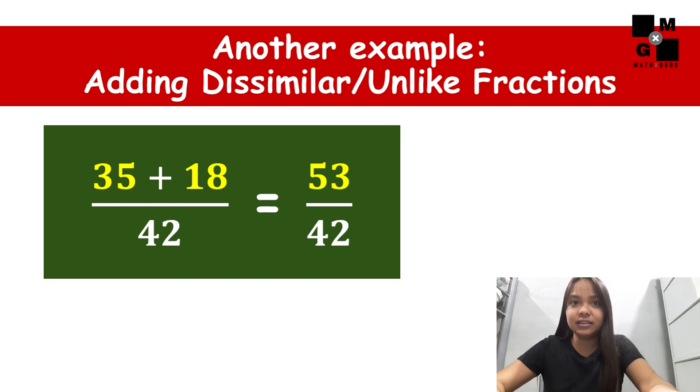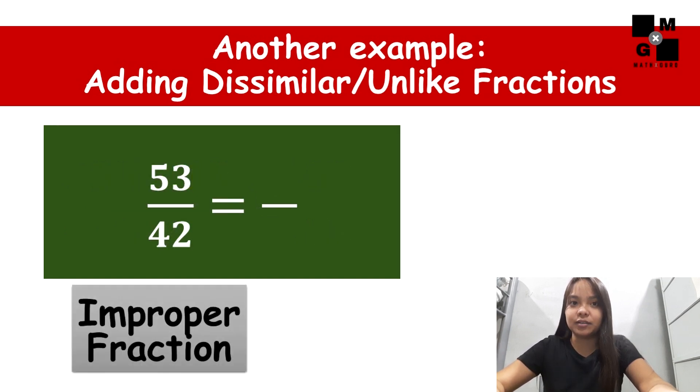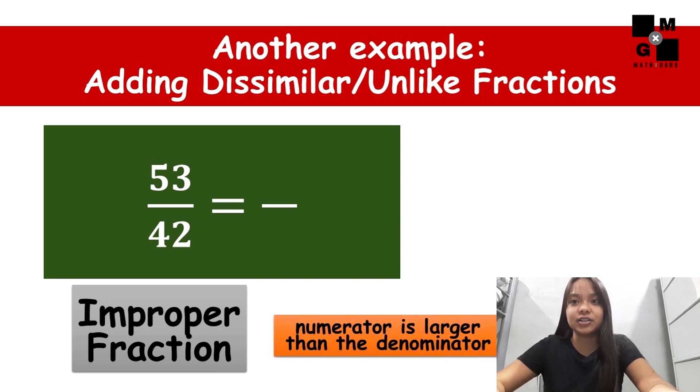Add thirty-five and eighteen, that's fifty-three. What have you noticed with our final answer? If you're thinking that this is an improper fraction, you're right. An improper fraction is a fraction whose numerator is larger than the denominator. So, what are we going to do with our answer? Since the answer is an improper fraction, we must convert it to mixed number.